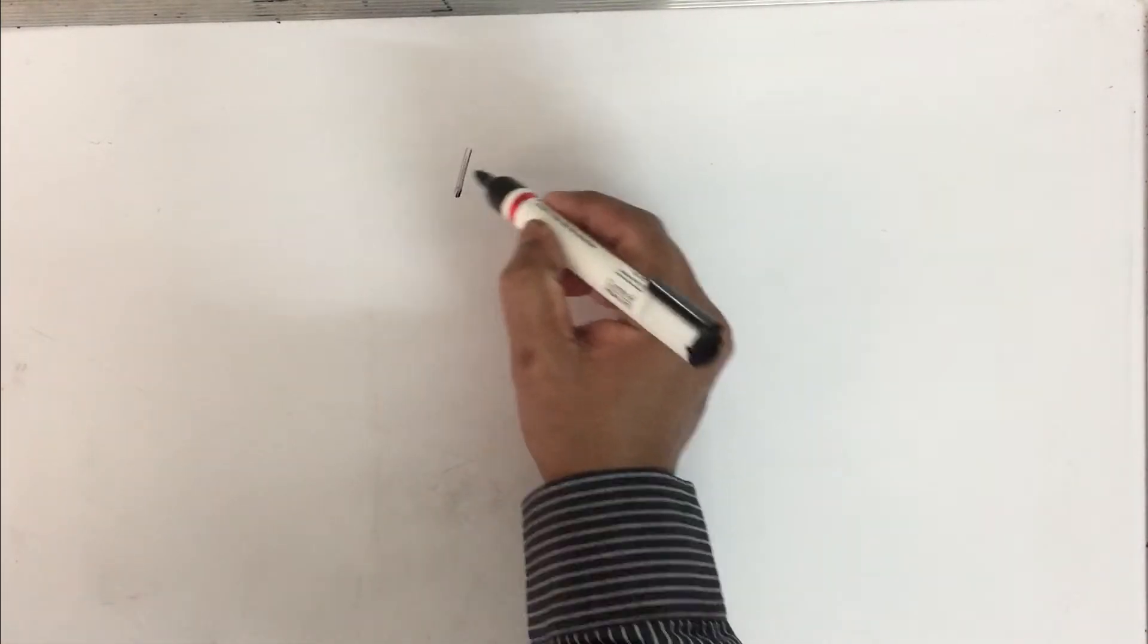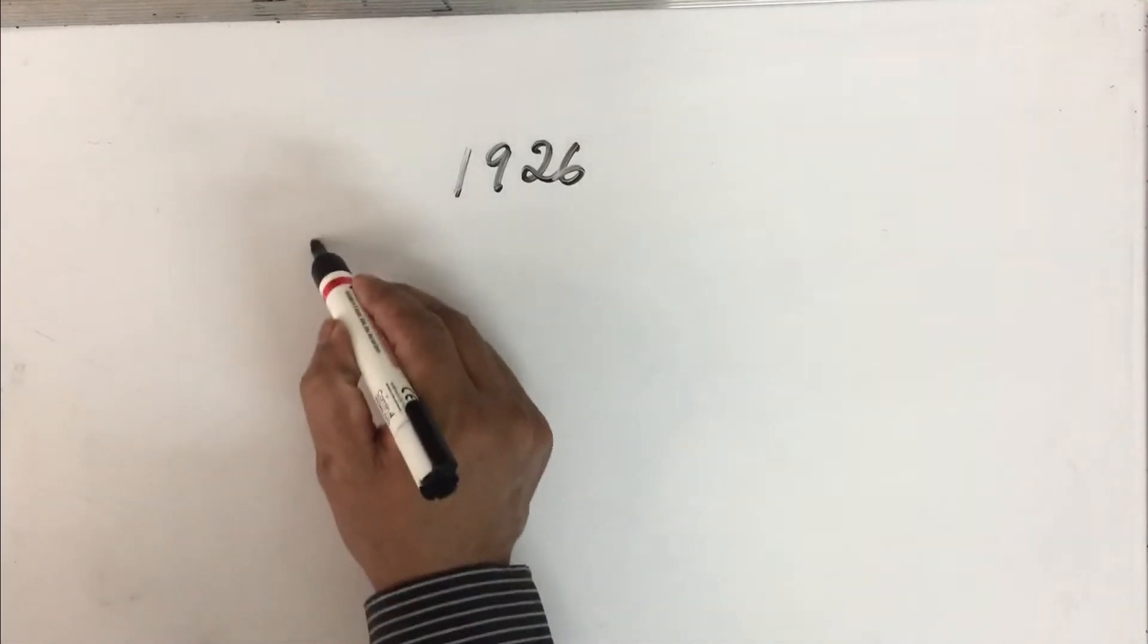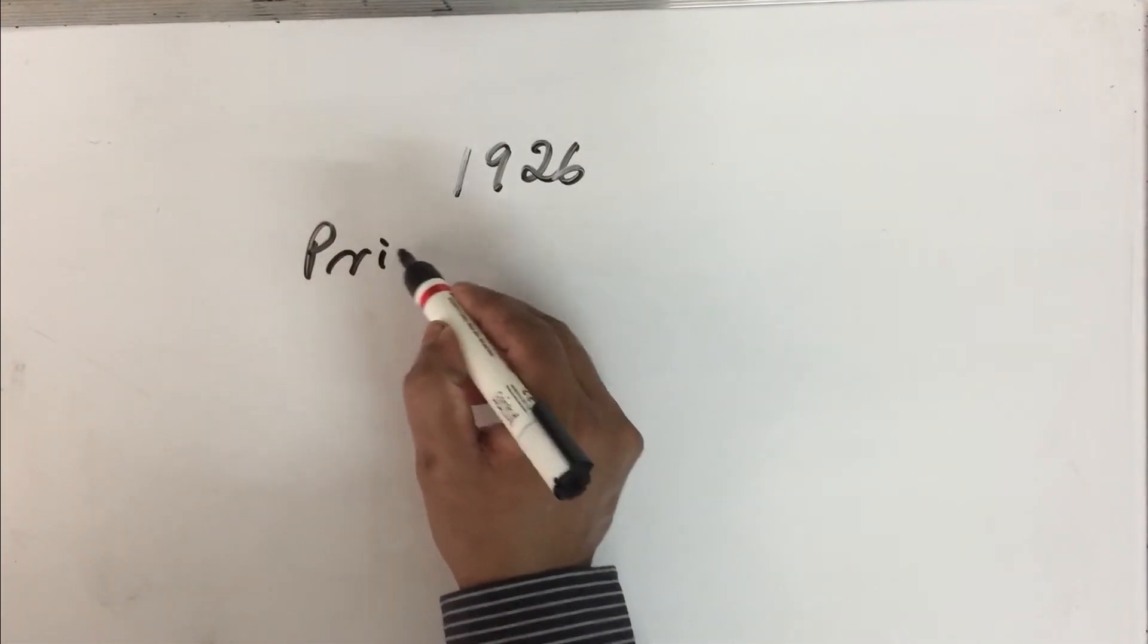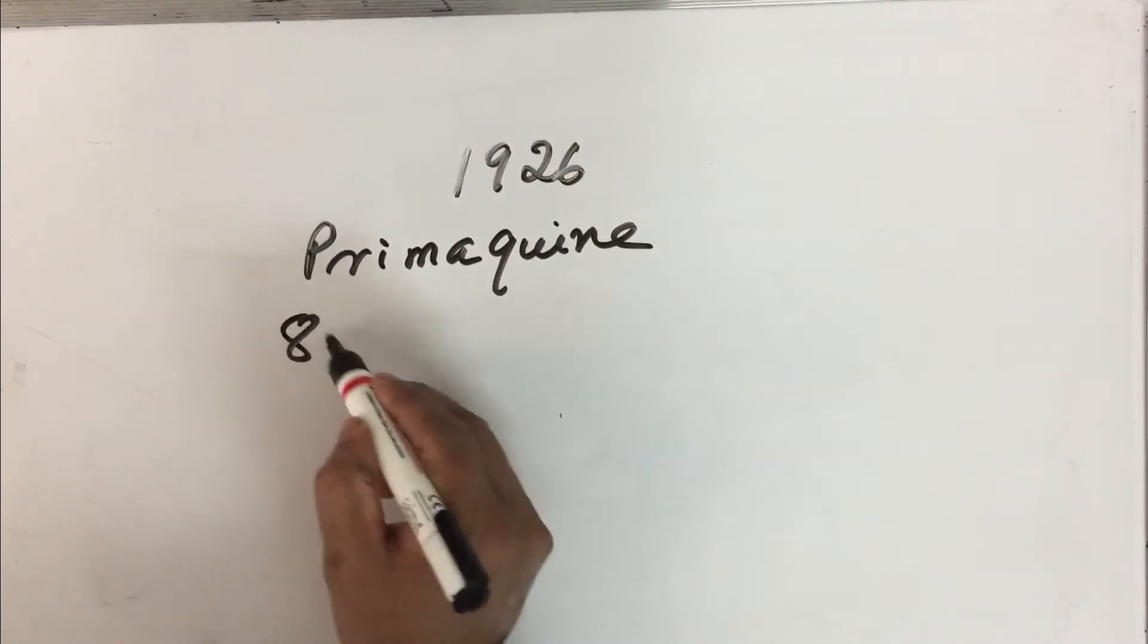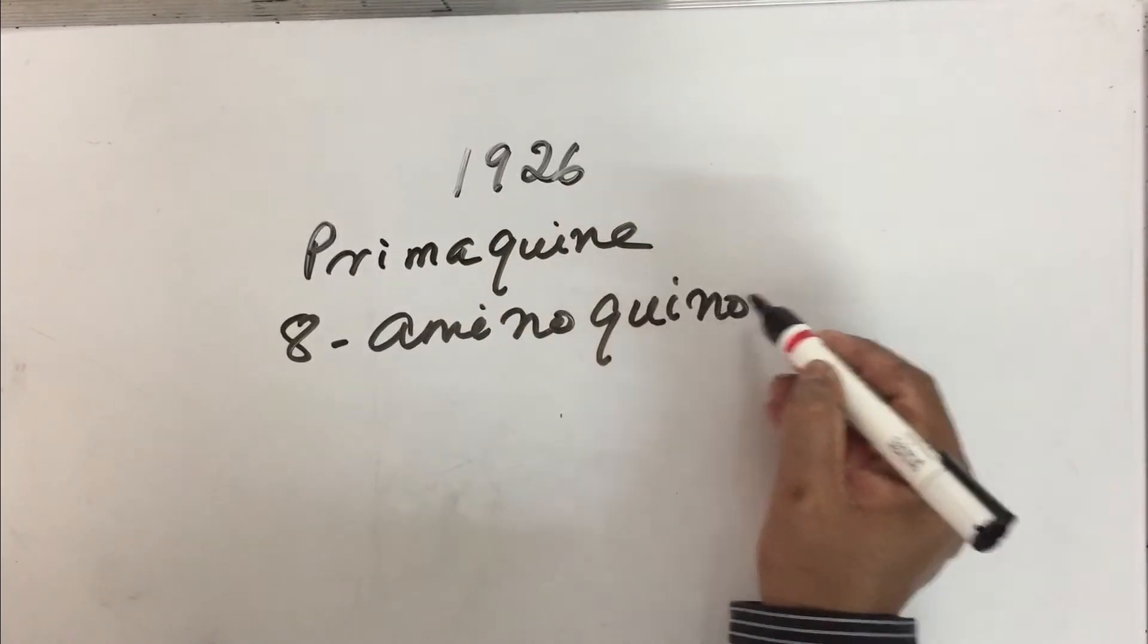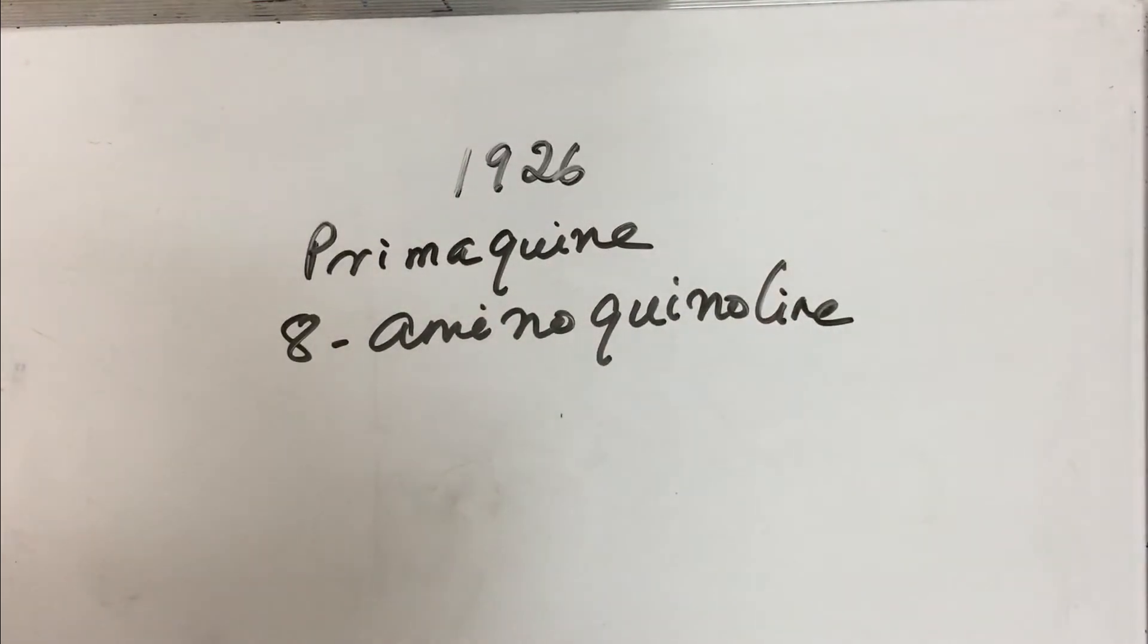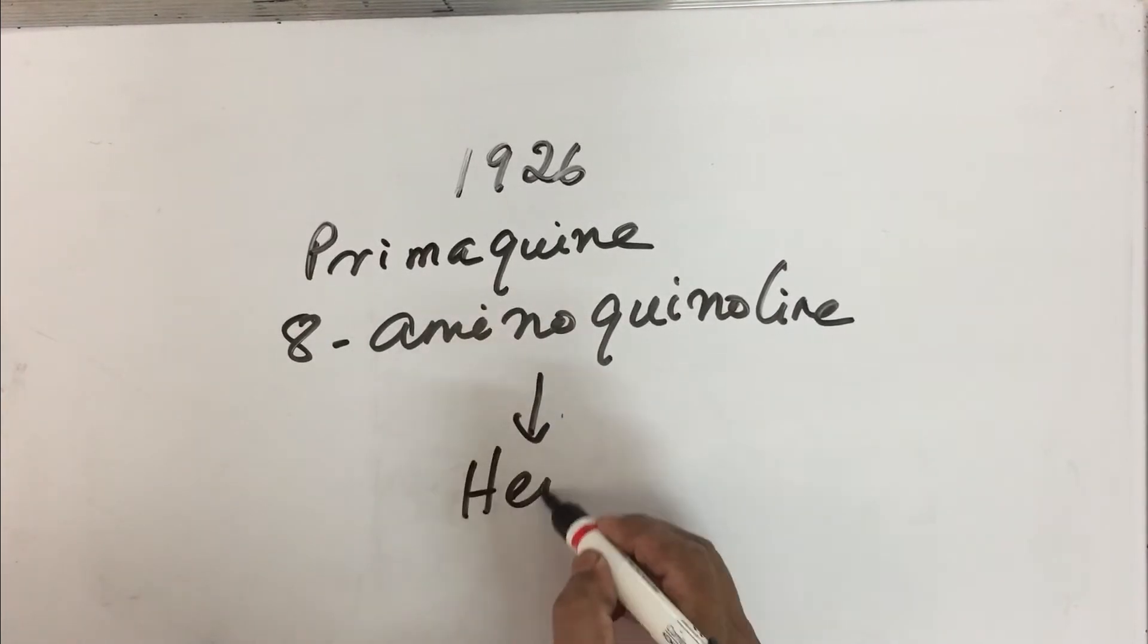There is a very beautiful story about how this deficiency was discovered. In 1926, when medicines like Primaquine or 8-amino-quinolins were used for treating malaria, when patients were treated with these medicines, they found a lot of hemolysis taking place.